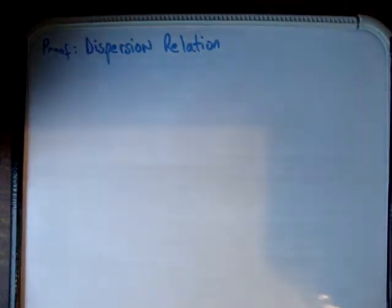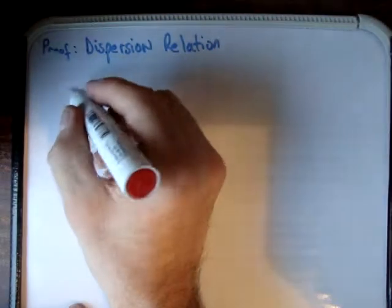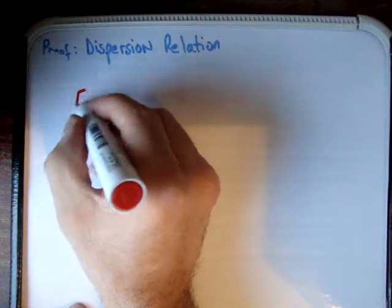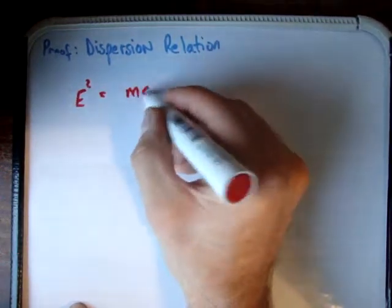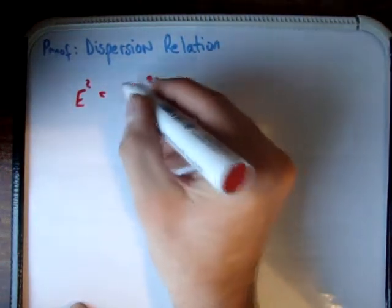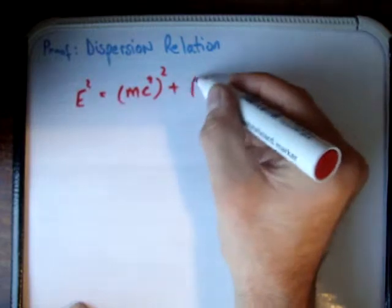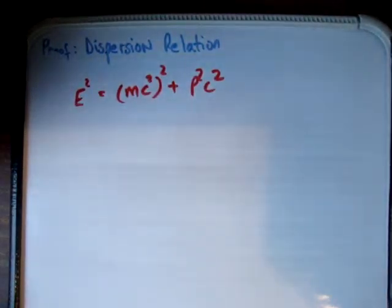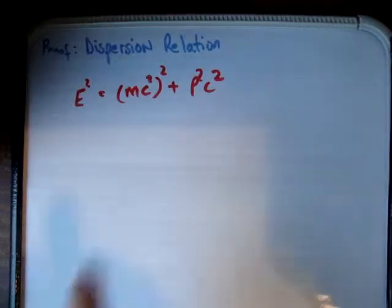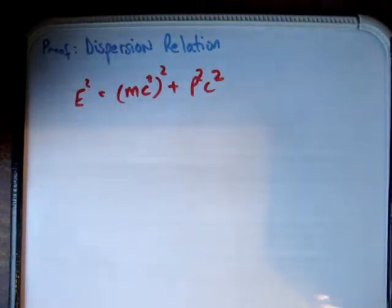We know from relativity, or if you did a course in modern physics, that E squared is equal to m₀c² squared plus p squared c squared. That's just one way of writing it — it involves the rest mass and the kinetic energy as well.